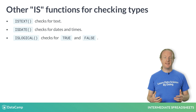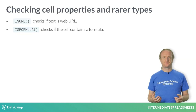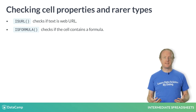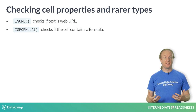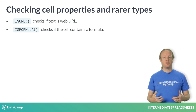Similarly, isText checks for text data, isDate checks for date data, and isLogical checks for logical data. In addition to checking for the four common data types, there are some other checks you'll encounter in this chapter. You can check if the text in a cell is a web address using isURL, and you can check for formulas using isFormula.